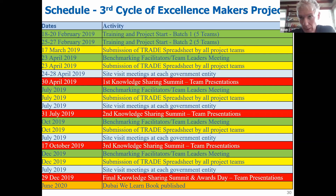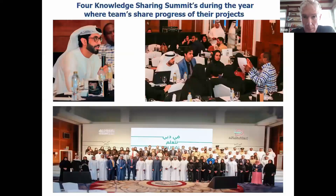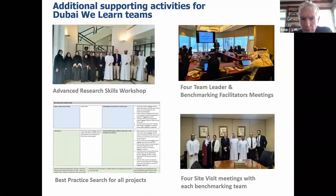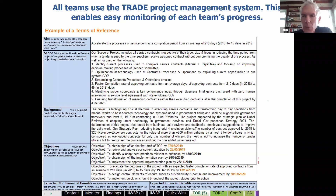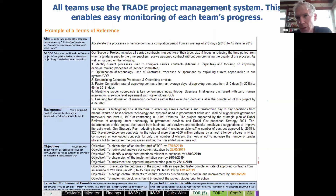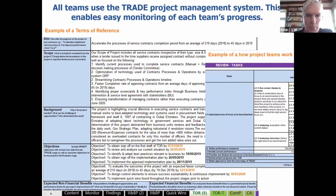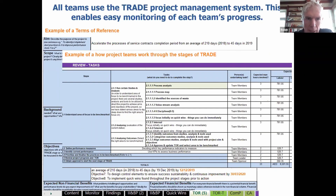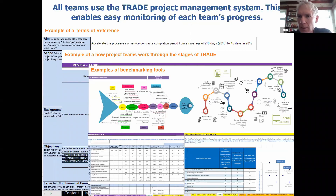Six months after the program ends, we write a book sharing all the case studies from those projects. You can see photographs from the knowledge sharing summits in Dubai. The TRADE project management system uses Excel spreadsheets because everybody's familiar with Excel — there are over 40 different tabs with tools and methods to assist you in a benchmarking project. This includes things like the terms of reference, planning for the review stage, fishbone analysis, process mapping, and best practice selection matrix.